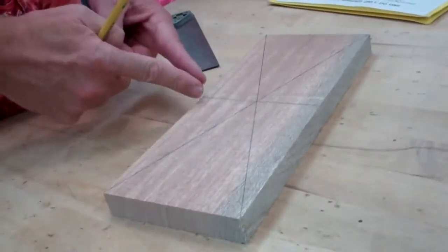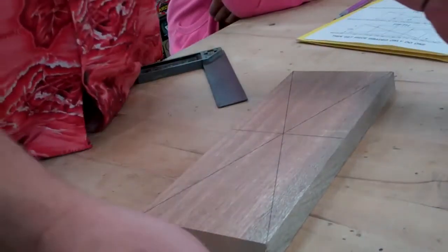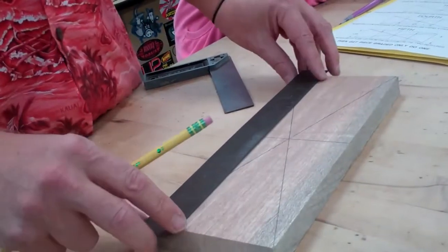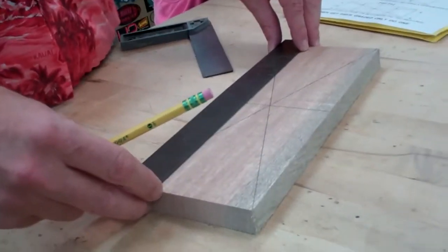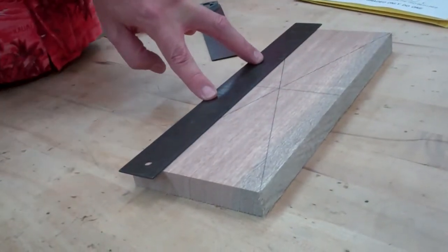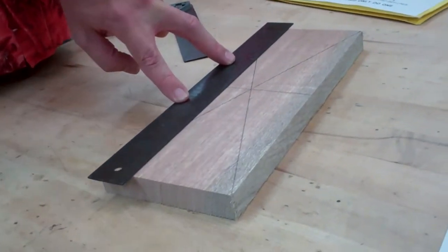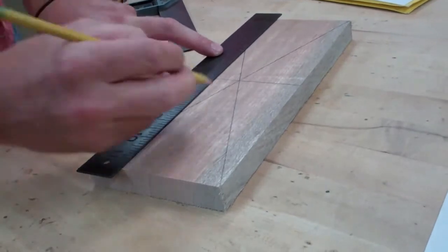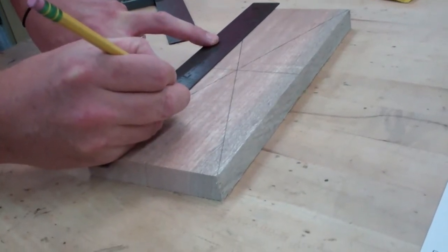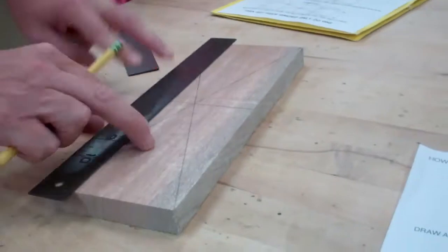Then how much are we going to measure on each side of that line? You need to just pick a number. Six. Add two to six, put a little mark. Minus two from six, put a little mark.